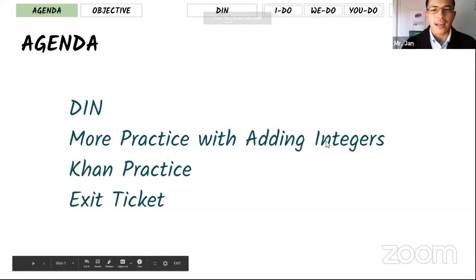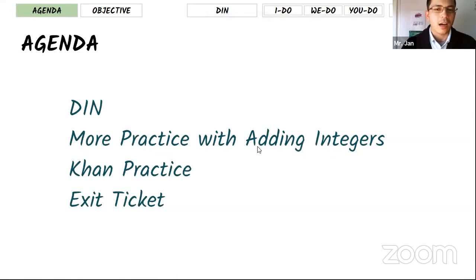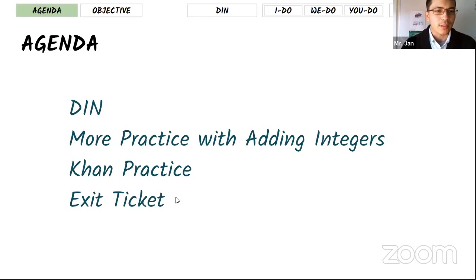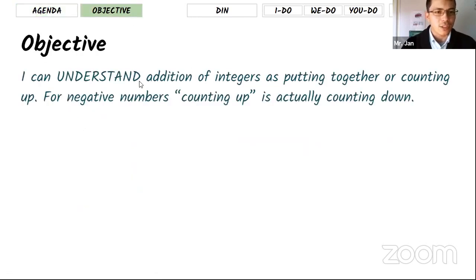Today we're going to practice more adding integers — not only on number lines, we're going to see a little bit different ones. We have one assignment, it's just four questions and an exit ticket, and we're all set. We're going to start this week with a review of where we left off last week on adding integers. The objective is: I can understand addition of integers as putting together or counting up.